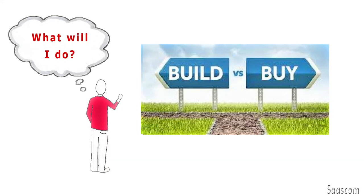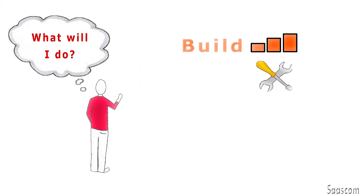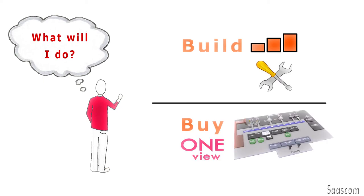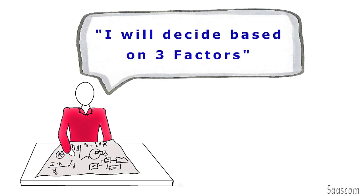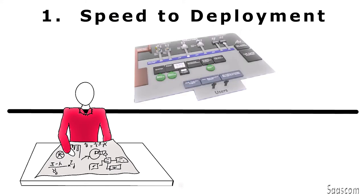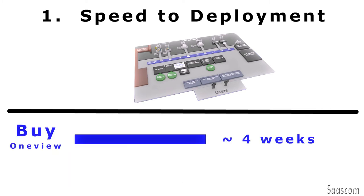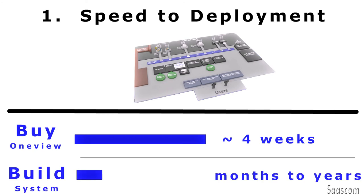The big question was the build or buy issue. Would he get the sales platform built by the company's software development people, or would he buy the OneView system from Sasscom? He analyzed his options and decided to base his decision on three factors. First, how quickly could he get the sales platform up and running? The OneView system could be ready within four weeks. It would take months, and maybe years, for the IT development team to create a solution. Clearly OneView won here.